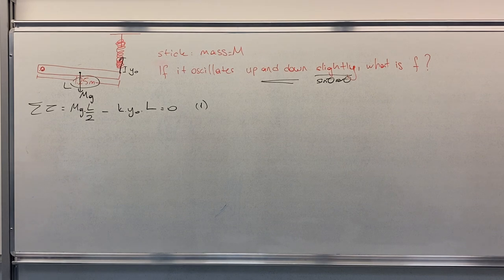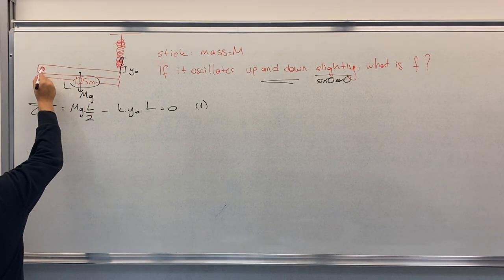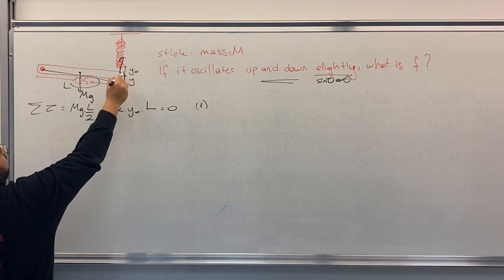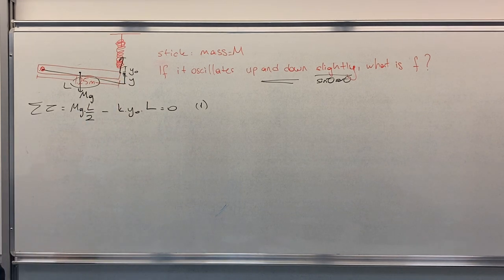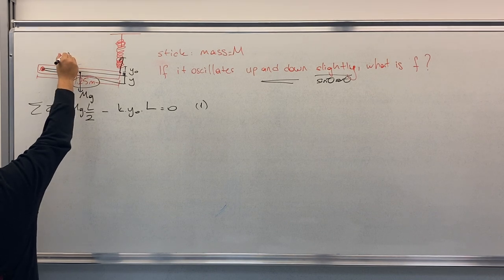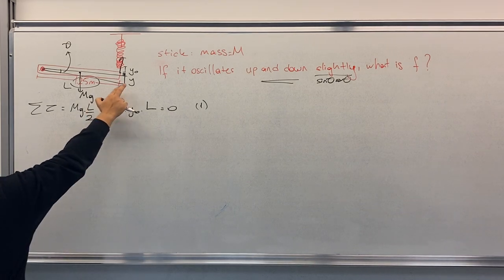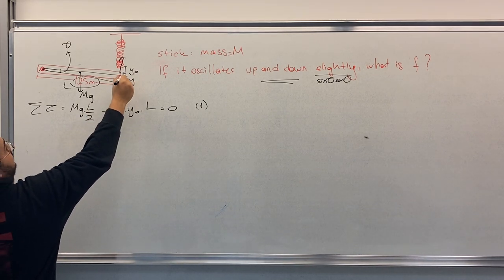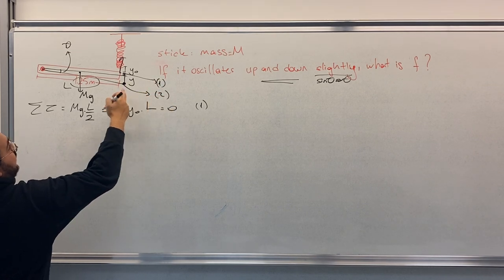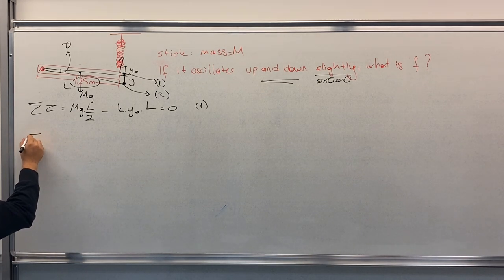Now, let's say that we start to oscillate the stick and the stick goes a little distance y from the equilibrium point, creating an angle theta. Let's call the equilibrium point 1 for equation 1 and this displaced point 2. At point 2, we also need to write the total torque.